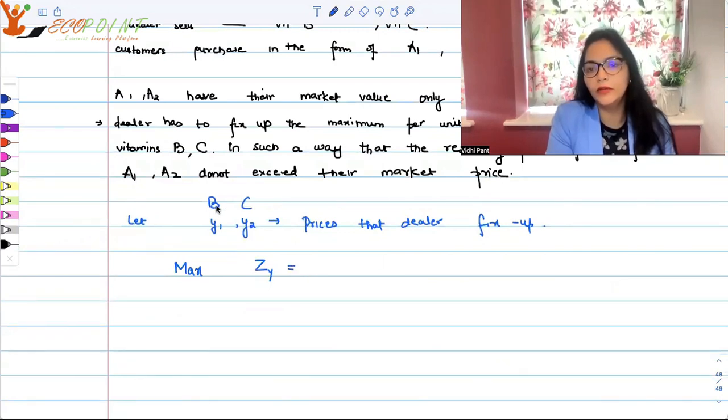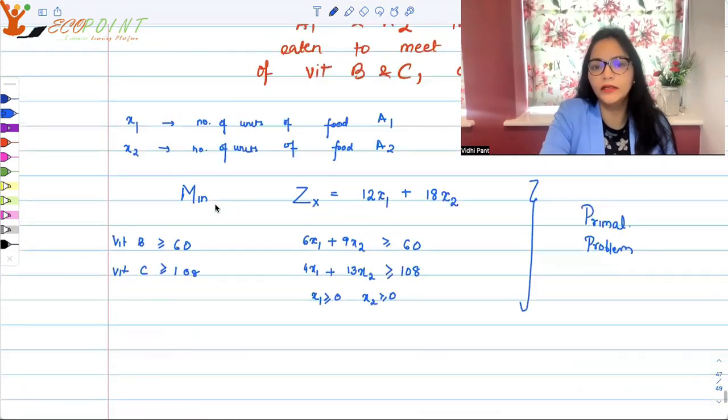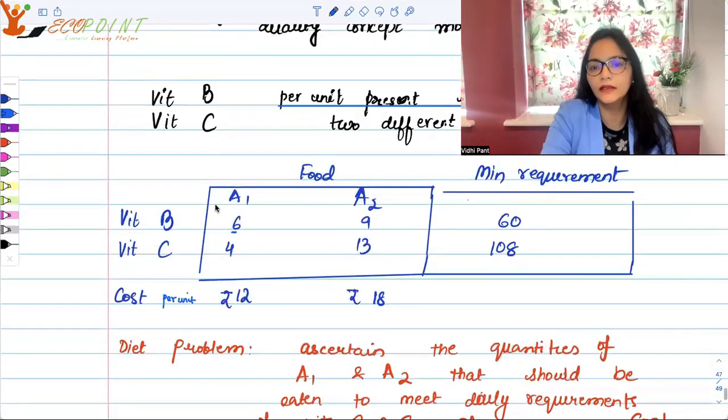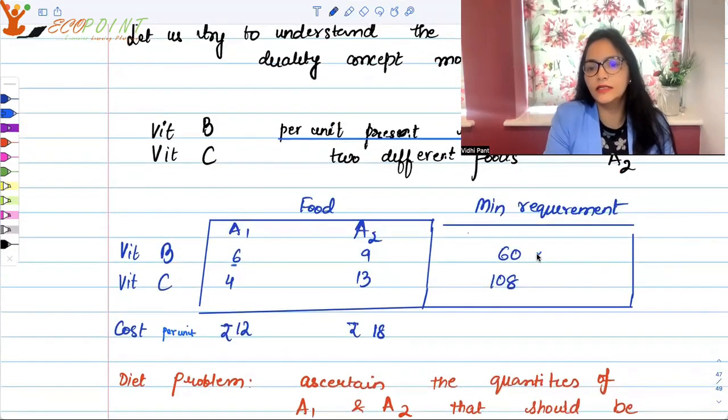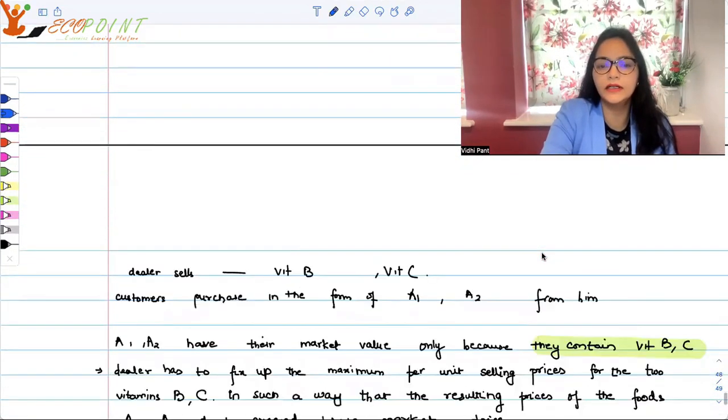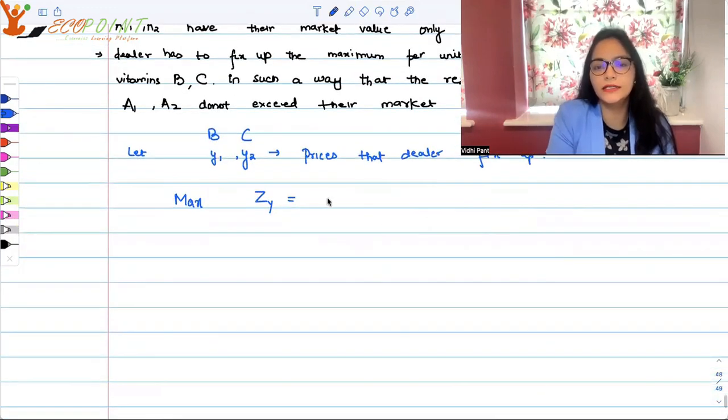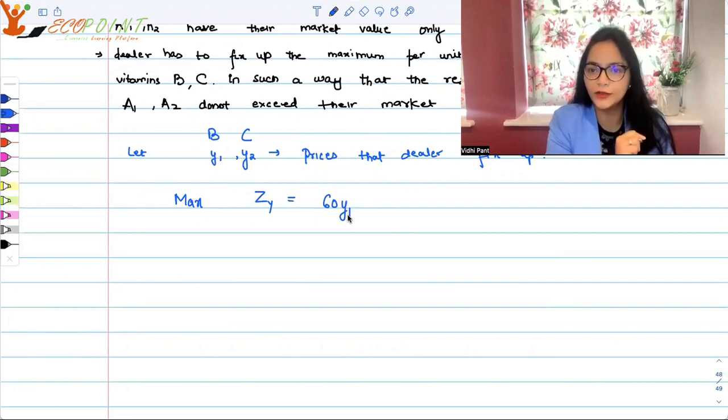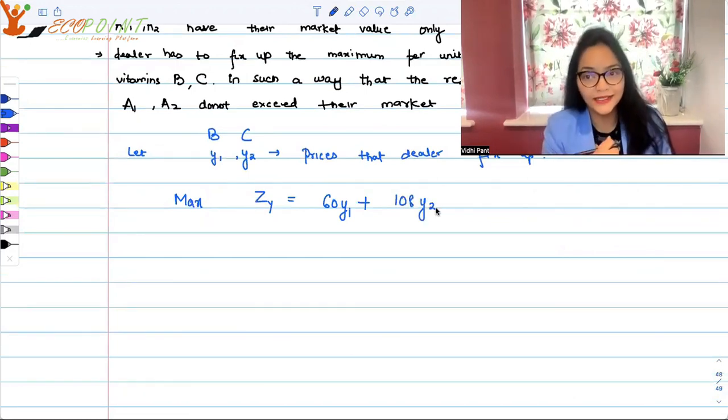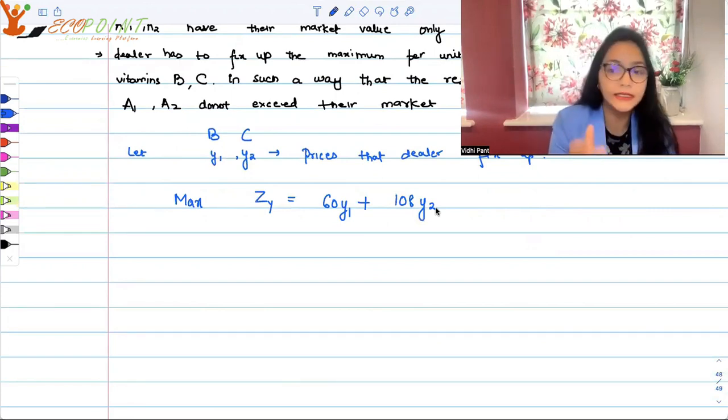Maximizing - I should call this minimizing Zx because the variable we are taking X there, here we are taking Y. We can say maximizing Zy, which is what? Now vitamin B, what is the minimum requirement? 60 units, right? He can earn how much? He can earn 60 into y1. Y1 is the selling price associated to B, so 60y1 + 108y2. He would want to maximize this now with certain constraints.